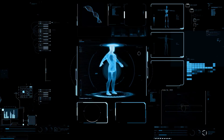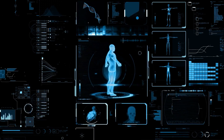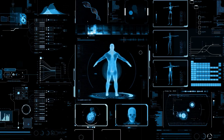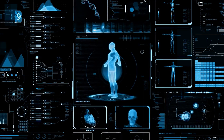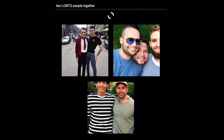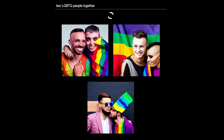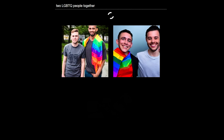And who's to say that the AI isn't racist or close-minded about certain groups of people? We typed in 'two LGBTQ people together,' and every single result was two white men, every single time.